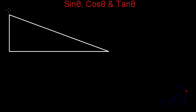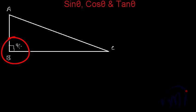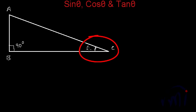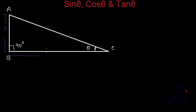So as you can see I have already drawn a right angle triangle. Let me call this as point A, this as point B and this as point C, where this is 90 degrees, and now let me call this angle as angle theta. So if this is angle theta, the line opposite to that angle is called the perpendicular, usually denoted as P, and the line adjacent to that angle and 90 degrees is called the base, and the line opposite to 90 degrees is called hypotenuse.